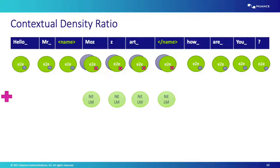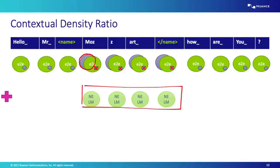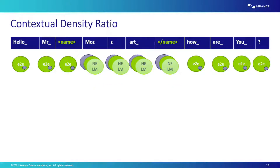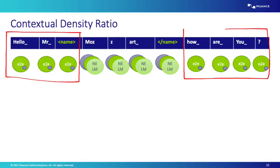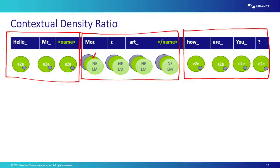The main difference between contextual density ratio and shallow fusion is that we subtract this internal language model estimation for each named entity token, to counteract the internal language model distribution of the end-to-end system before adding the named entity language model distribution. So in the contextual density ratio approach there are different regions: outside a named entity segment we score with the end-to-end system only, and within a named entity segment we apply three scores — the end-to-end score, the shallow fusion score, and the internal language model score subtracted to remove the internal LM component.